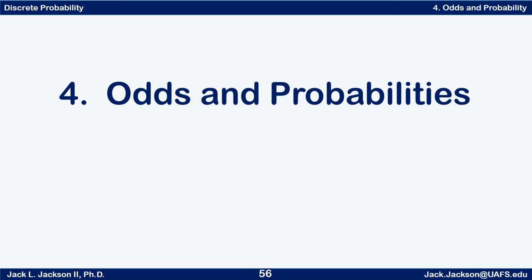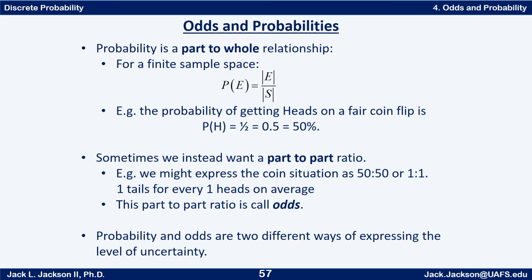This is Jack Jackson. In this video we're going to talk about odds and probability. We've been talking about probabilities quite a bit, but sometimes you'll hear people talk about odds. Odds are very closely related to probabilities — in some ways it's sort of the same basic concept, but it's a different numerical way of representing this degree of uncertainty. So odds and probabilities are not exactly the same thing, but they're closely related.